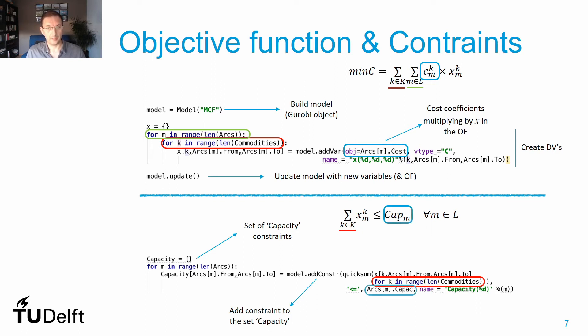This capacity goes on the other side, so I have the sum over k that needs to be less or equal than this arc capacity, which is the capacity parameter for each arc m. And because I have to write these constraints as many times as the number of arcs, then I need to put this inside a for loop that goes over all elements in L.